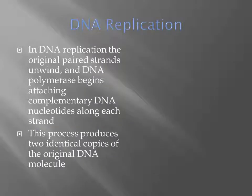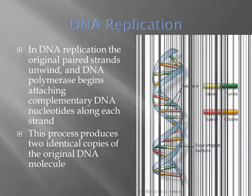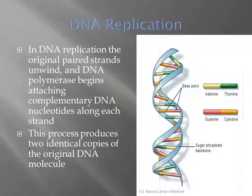In DNA replication, the original paired strands unwind and DNA polymerase begins attaching complementary DNA nucleotides along each strand. This process produces two identical copies of the original DNA molecule. There are four nucleotide bases: adenine always pairs with thymine in DNA, and guanine always pairs with cytosine.